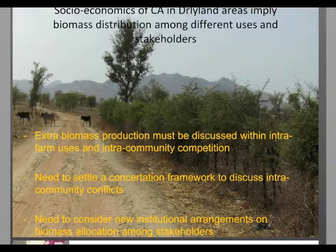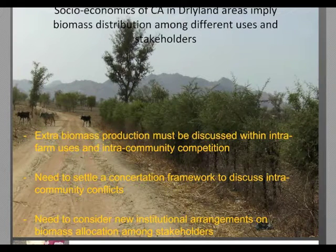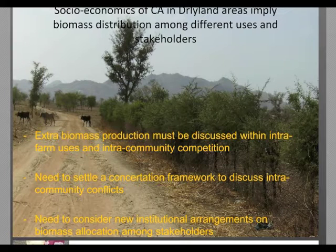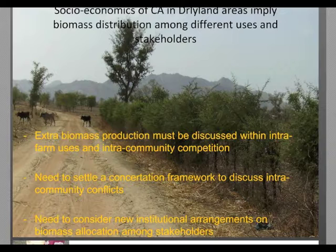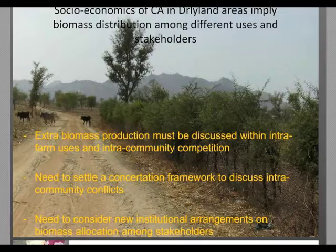The second step will be the need to settle a consultative framework to discuss extra-community conflict. The third point will be the need to consider the evolution of actual rules on access to biomass and on access to crop residues — that is, we may need to shift from open grazing rules to other types of rules governing access to biomass.